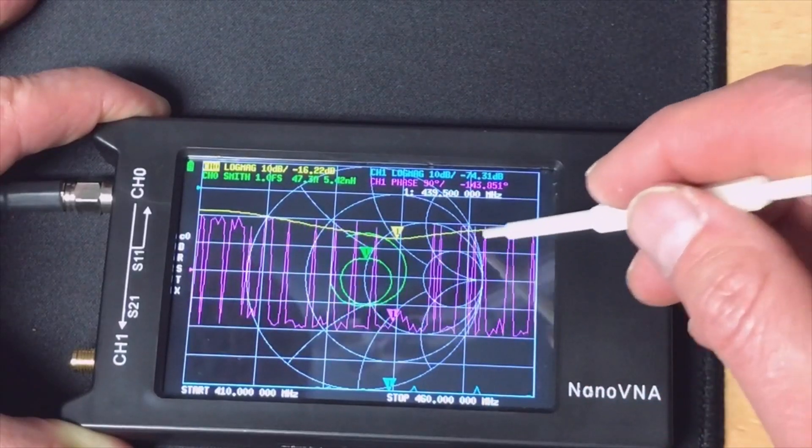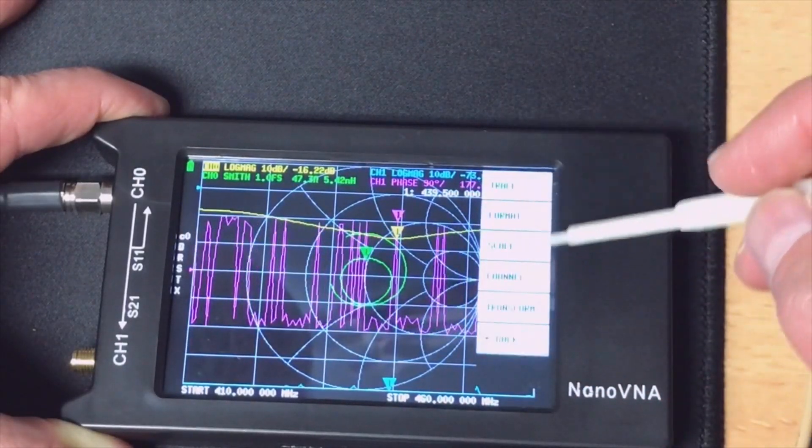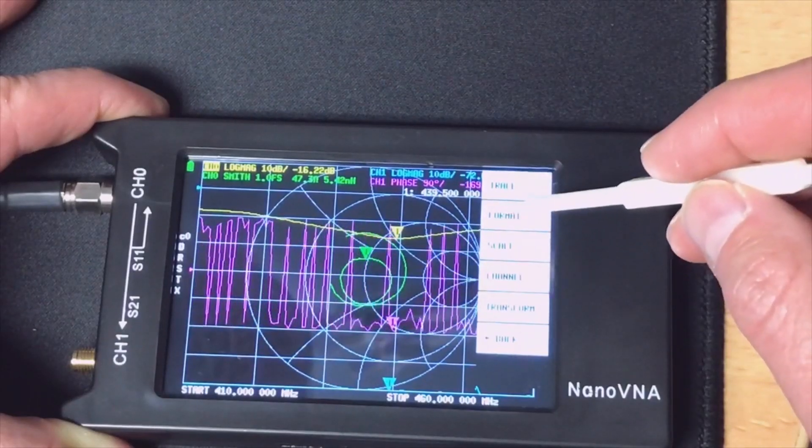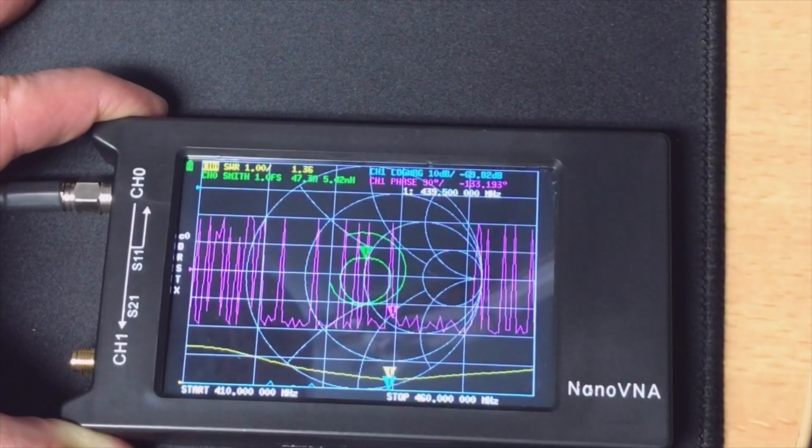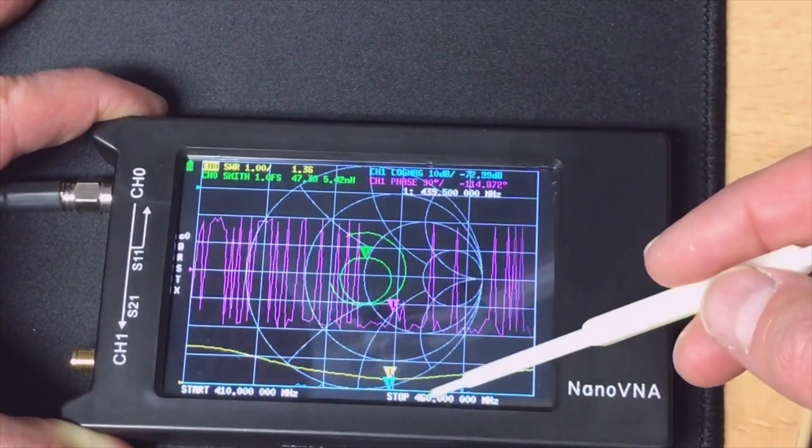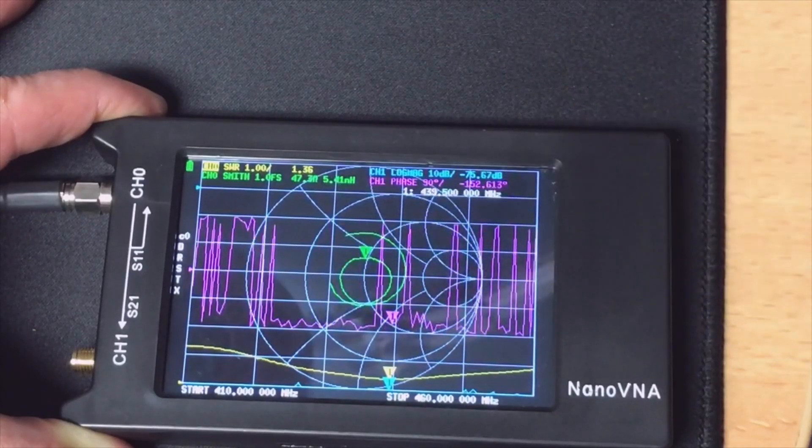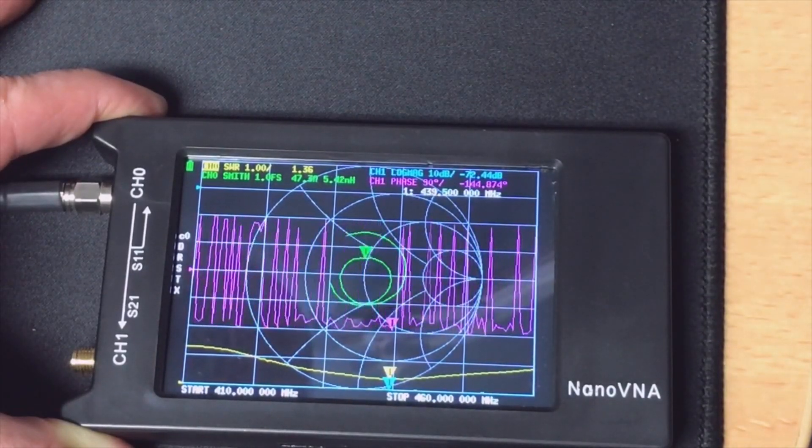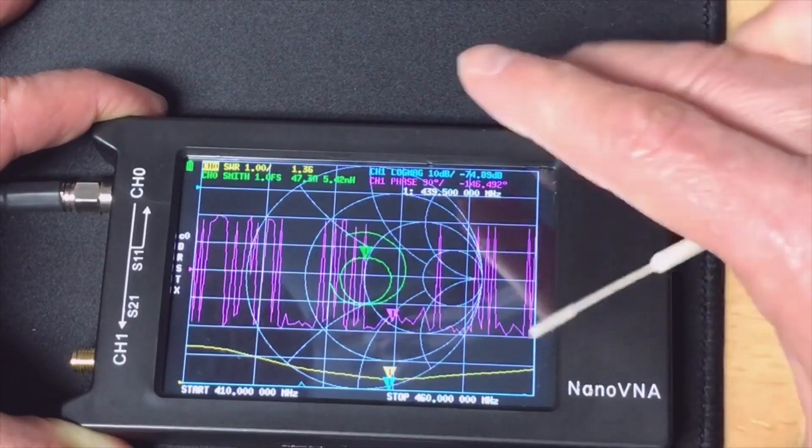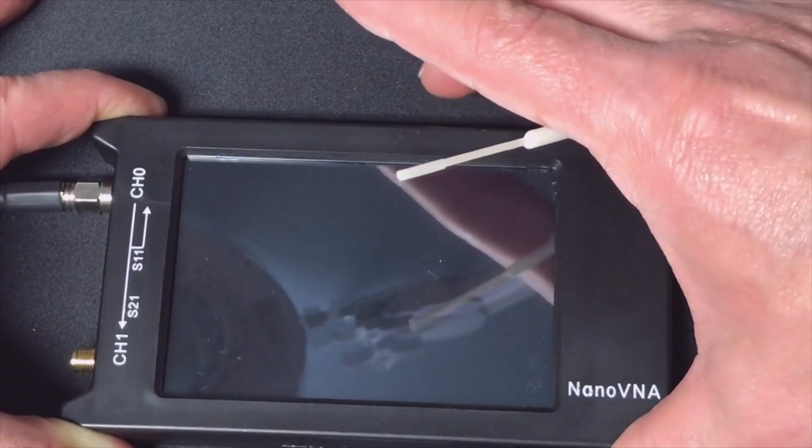Let's see if we can have an SWR display. Display format, I think SWR. Here you can see we have SWR of 1.37 on this frequency, so it's very nice to look at your antenna and where the dips are.